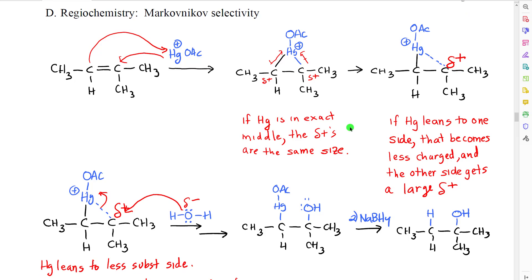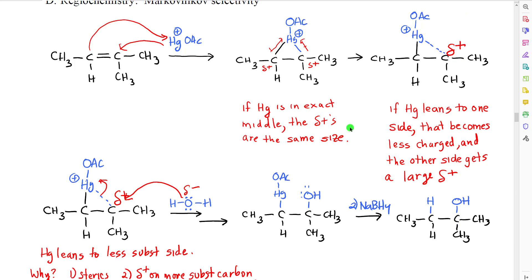With regard to regioselectivity, we can explain the regioselectivity by looking at the electron density on the carbons in the cyclic intermediate. So if we imagine using this reactant, which has two carbon groups on one of the carbons of the alkene, but only one carbon on the other, in the first step, we would form our cyclic mercury intermediate. We would see that there would be a partial positive charge on this carbon, which used to be part of the alkene, and also on this carbon. If the mercury were to sit exactly in the middle, what we would expect is that the electron density in both of those bonds would be balanced, the electron density on the carbons would be balanced, the partial positive would be exactly the same side.